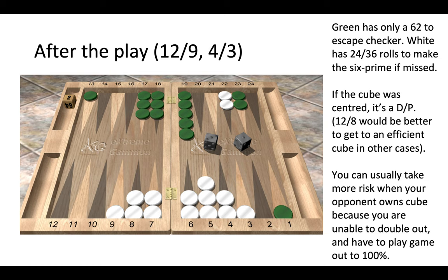Like we saw before, green really only has one super joker here in this position. If green does not escape or does not hit us, then we have 24 out of 36 rolls to make the six prime as white. So again, we take the risk and we have the big reward. As I mentioned before, if the cube was centered, this would actually be a double pass before the move had been played. But let's say you missed that double pass scenario.